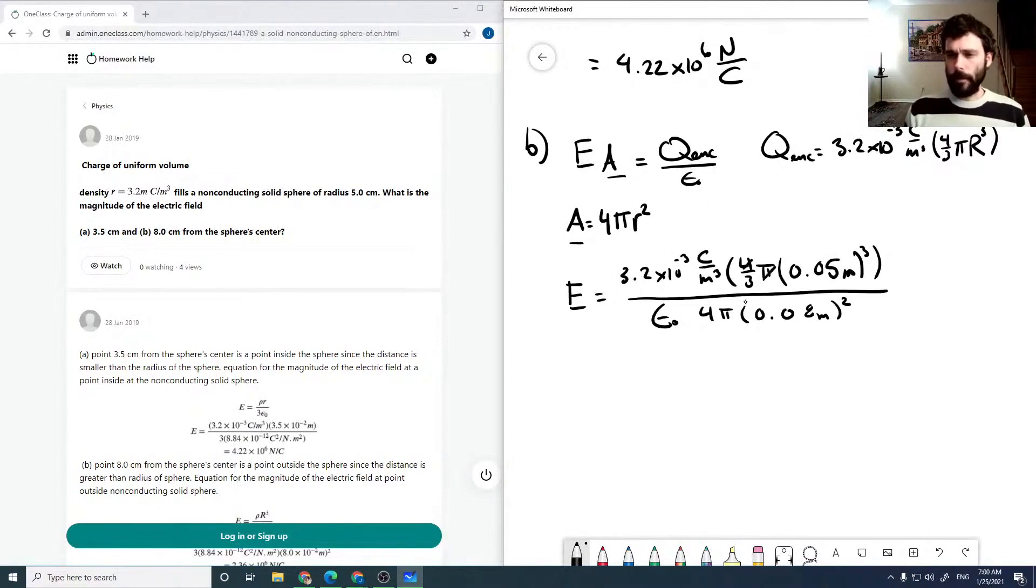The 4 and pi will cancel again. The r's will no longer cancel. If we do this on our calculator with epsilon naught as before, this becomes 2.35 times 10 to the 6 newtons per coulomb.